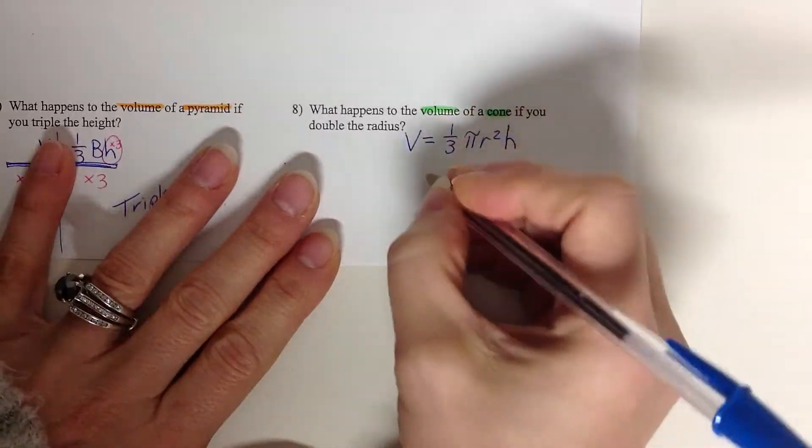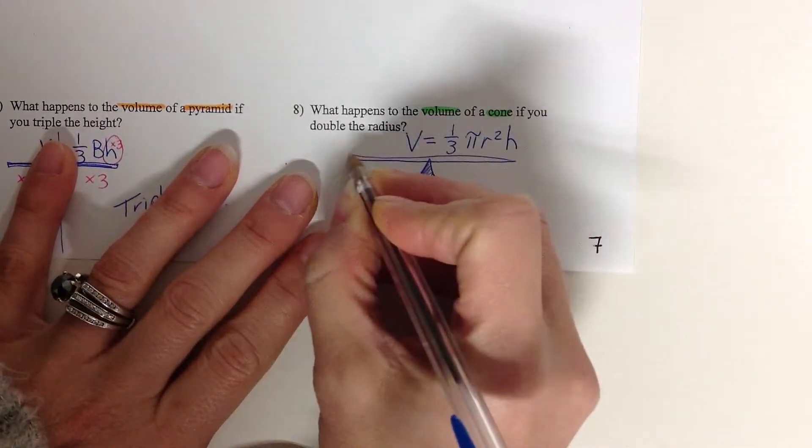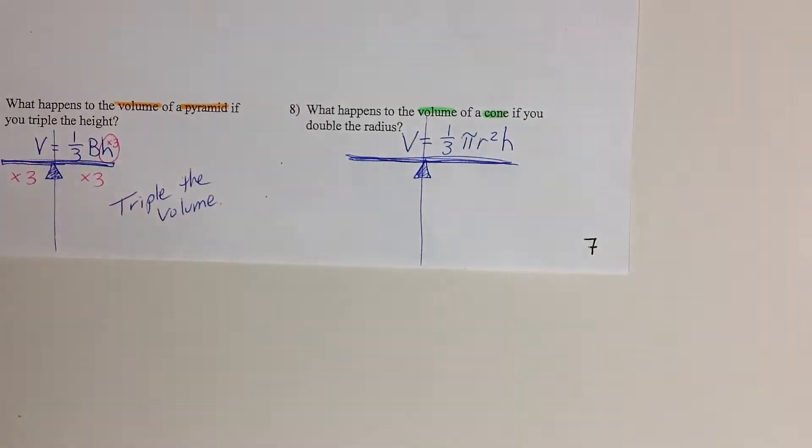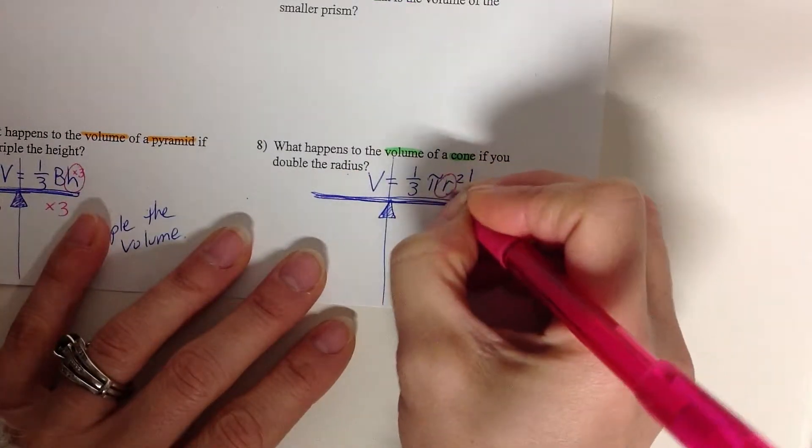The volume of a cone is one-third pi r squared times h. All right? And so now I'm thinking about that balancing of my equation. That left and right side, whatever happens to one side, happens to the other side. So what am I doing this time? This time I'm taking the radius. Here's my radius.